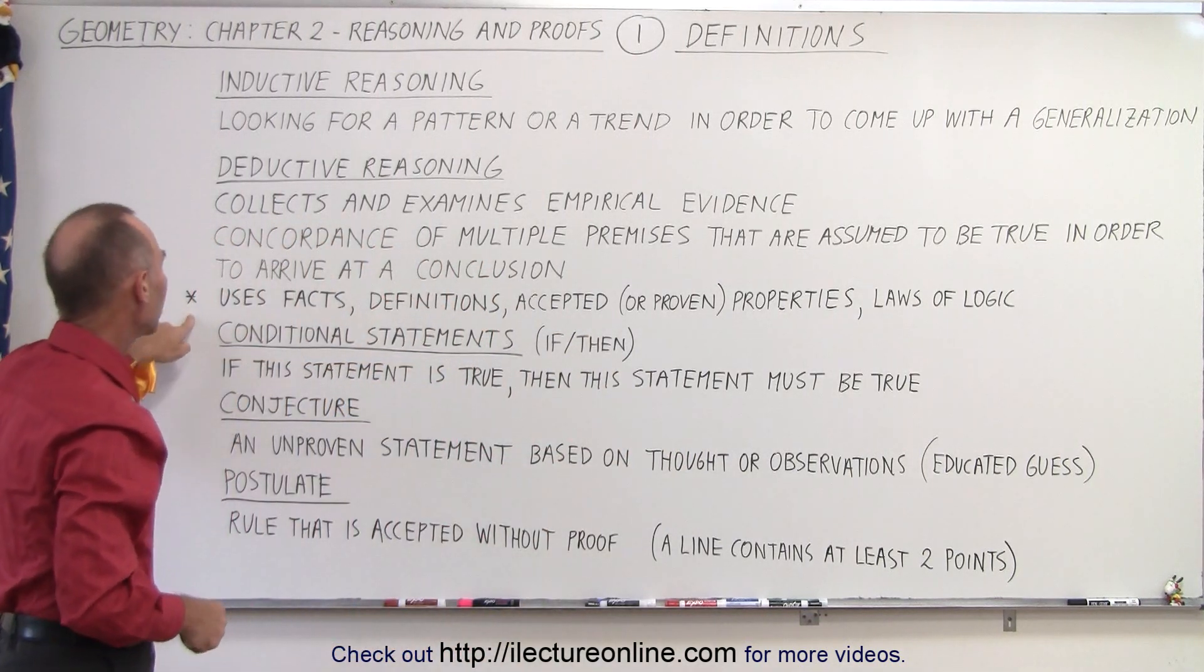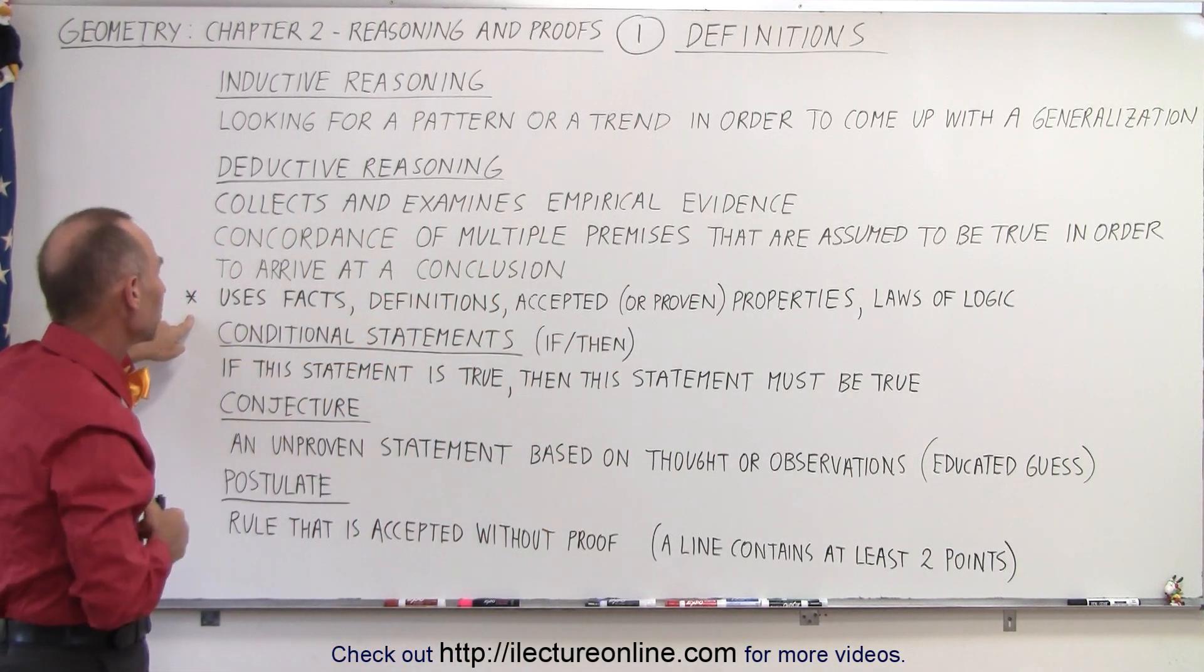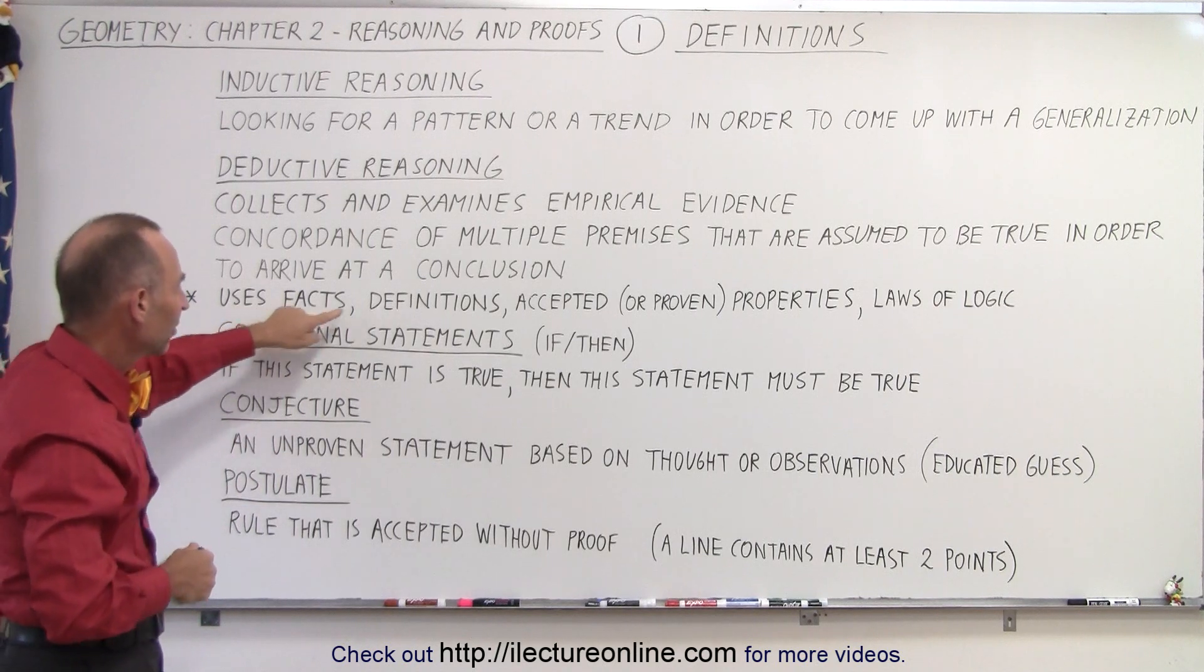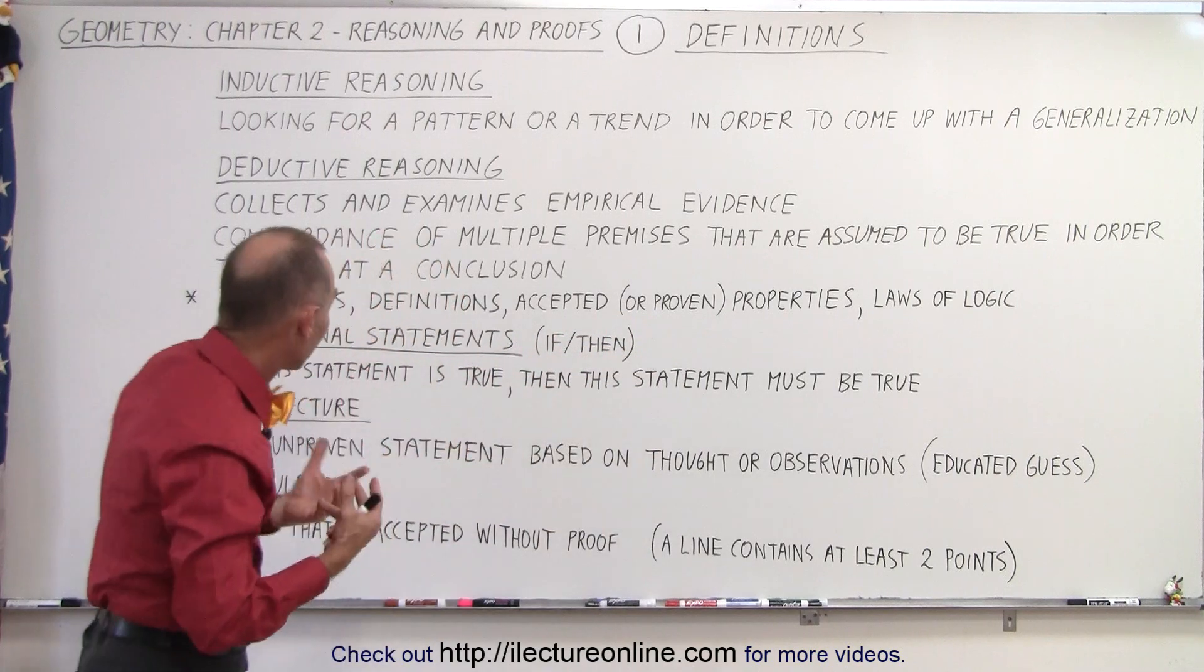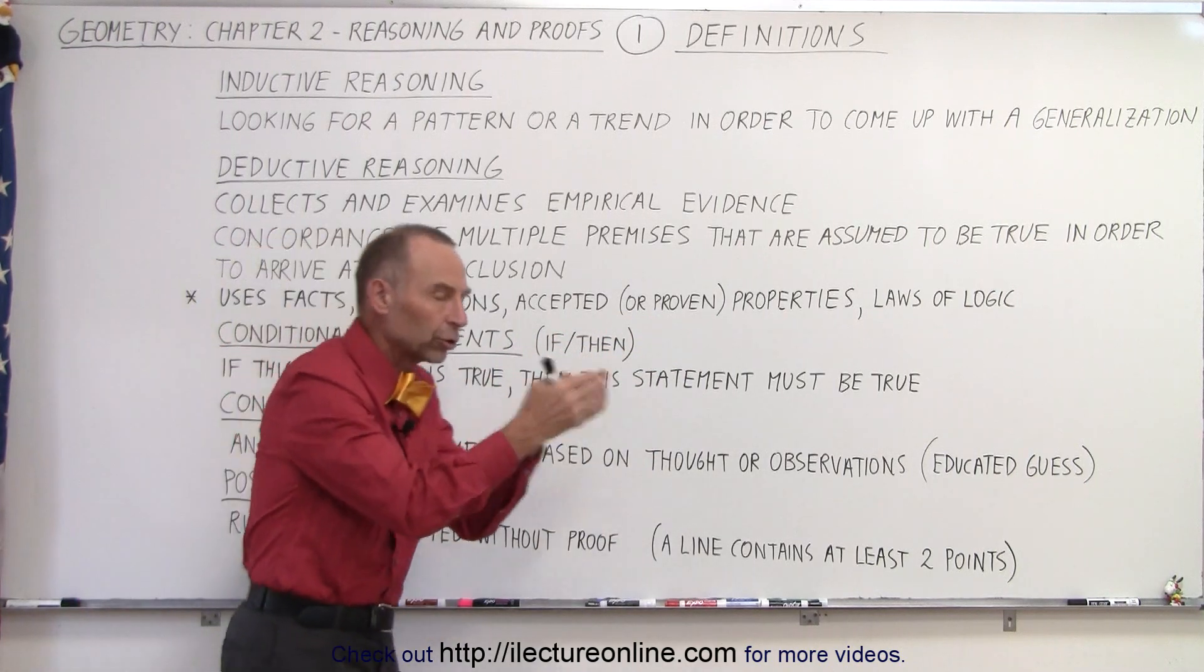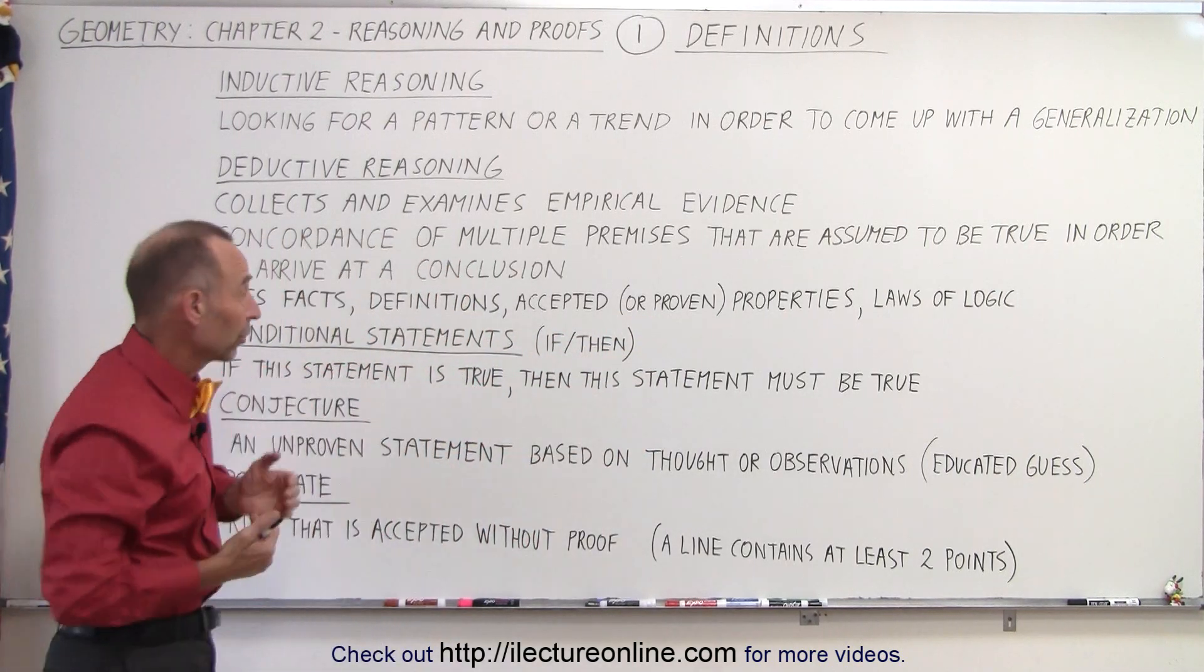Here we have a little star because this is specific for geometry. We use facts, definitions, accepted or proven properties, and then the laws of logic to come up with that final conclusion. So that's what we're going to try to learn here.